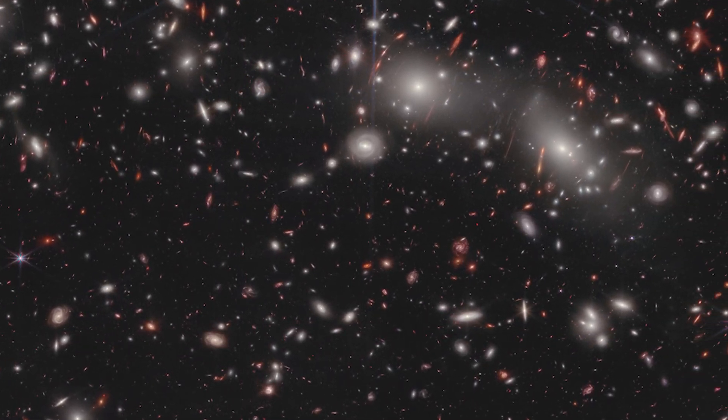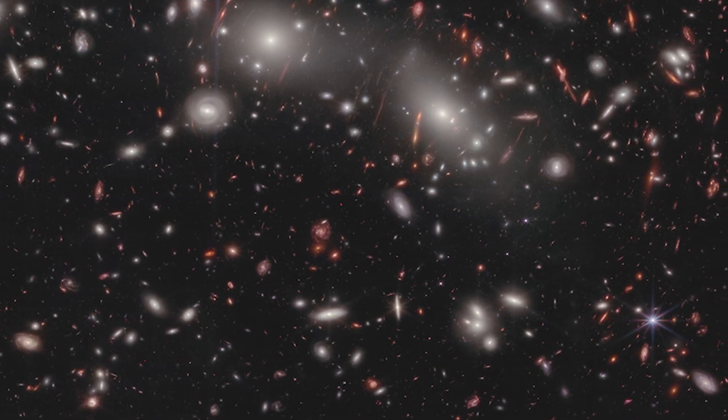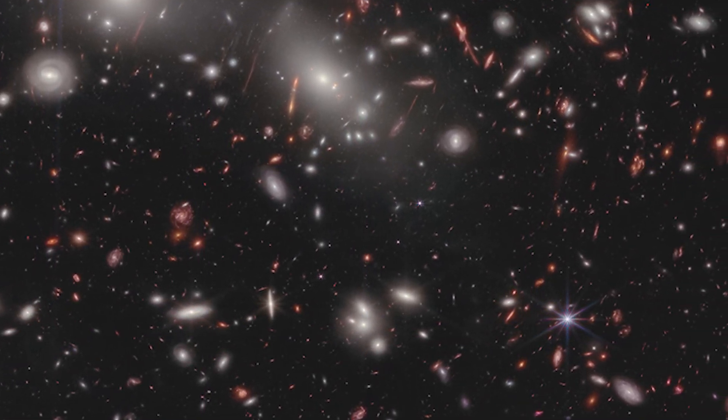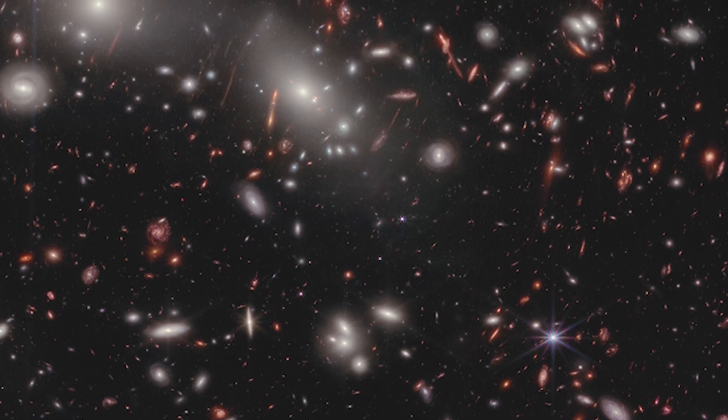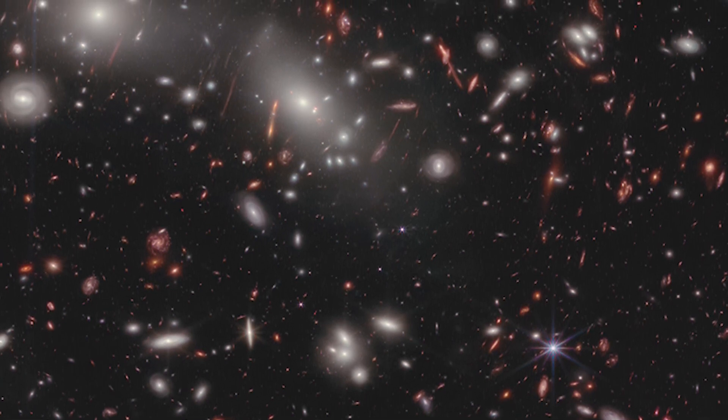Of particular interest are the hundreds of strongly-lensed galaxies in the lower right corner of the image, appearing as arcs of light. These galaxies have never been seen before, even by the Hubble Space Telescope.